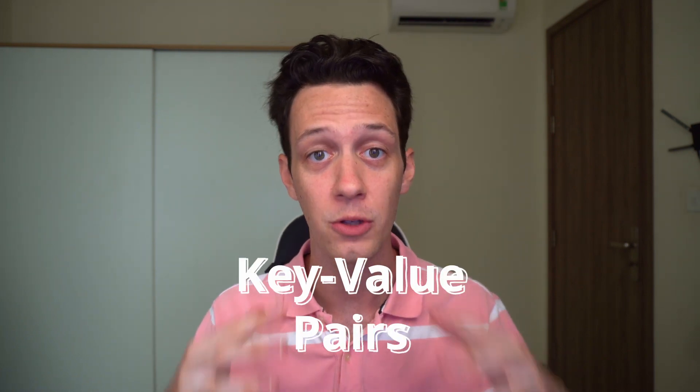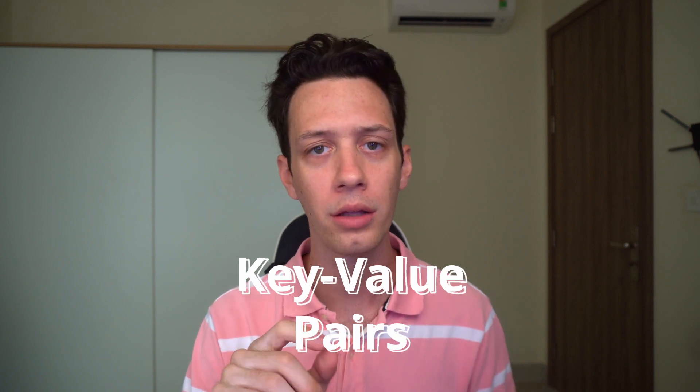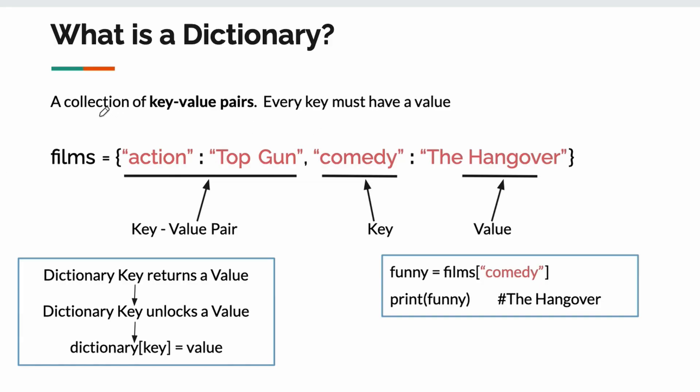Dictionaries are a powerful data structure in Python, and they store key-value pairs. Unlike iterable sequences like lists and tuples, we cannot index a position in a dictionary, but rather we index a specific key, which then returns the value to that key. A dictionary is a collection of key-value pairs — you're going to hear me say that a lot. I'm not jumping into everything today, only bits and pieces — there's too much to cover. Don't overwhelm yourself. Just understand the fundamentals.